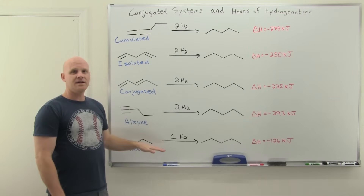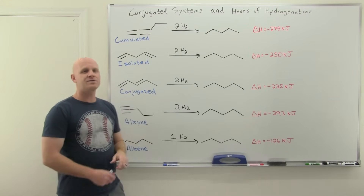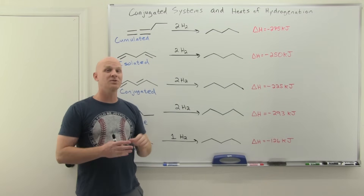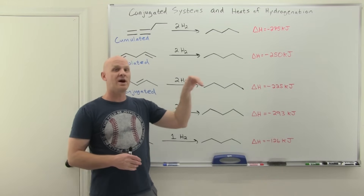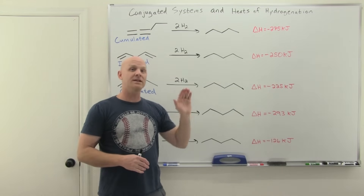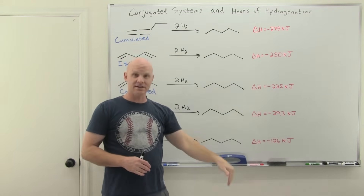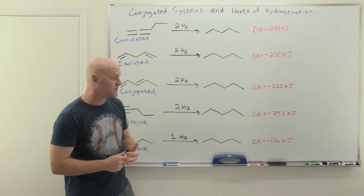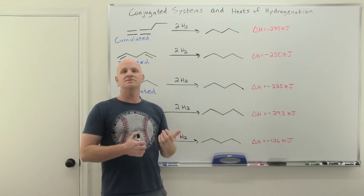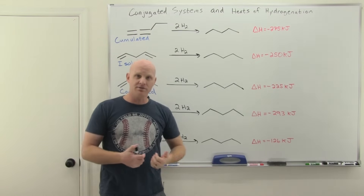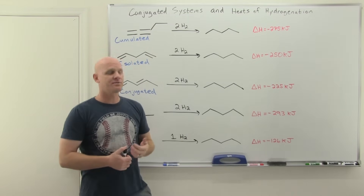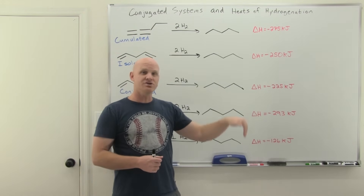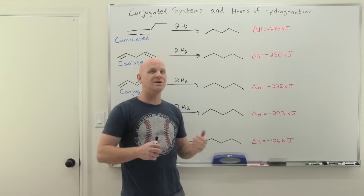This is a typical alkene. Back with alkenes, we learned that more substituted alkenes are more stable, and therefore when you hydrogenate them, they have less energy to release — lower heats of hydrogenation. We also learned that trans double bonds are more stable than cis double bonds, and therefore trans double bonds release less energy and have lower heats of hydrogenation.